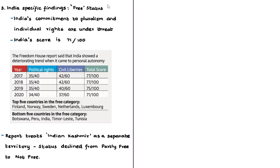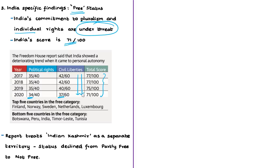India enjoys free status as a regional leader in democratic values. However, the report notes that India's commitment to pluralism and individual rights is under threat under the present government. India's score declined from 2017, with a 2020 score of 71 out of 100: 34 out of 40 in political rights, and 37 out of 60 in civil liberties. This places India among the bottom five countries in the free category, alongside Botswana, Peru, Timor-Leste, and Tunisia.